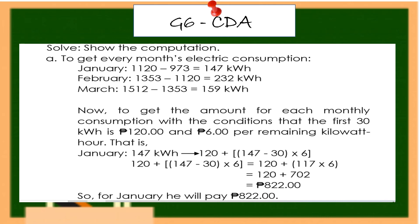To compute each month's electric consumption: January — 1,120 minus 973 equals 147 kilowatt-hours. February — 1,353 minus 1,120 equals 232 kilowatt-hours. March — 1,512 minus 1,353 equals 159 kilowatt-hours.